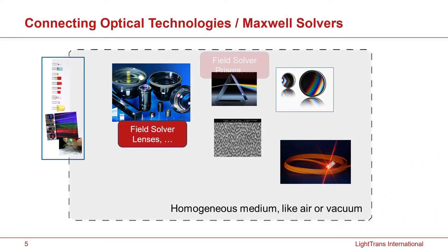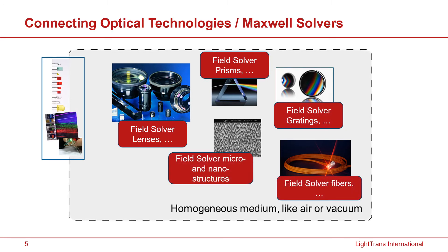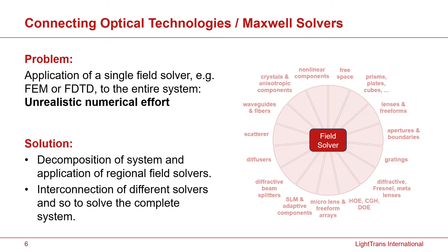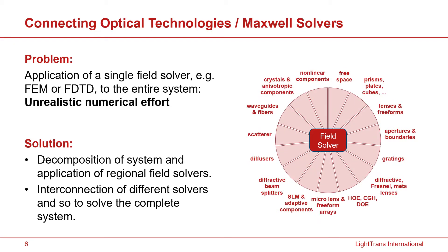There are different types of components which might appear in a complicated optical system nowadays — lenses, mirrors, prisms, gratings, and nano and microstructures. We try to find proper and efficient solvers for those components and use them in combination. It is not like a FEM or FDTD software; we use a combination of many different solvers. For example, for a free space diffraction problem, you could easily use a diffraction integral instead of a very complicated FDTD solver.